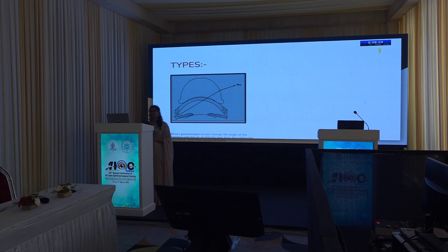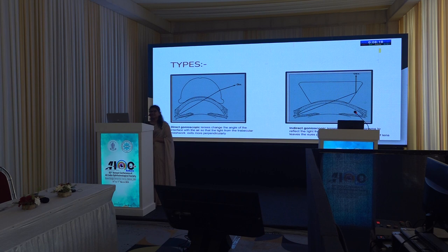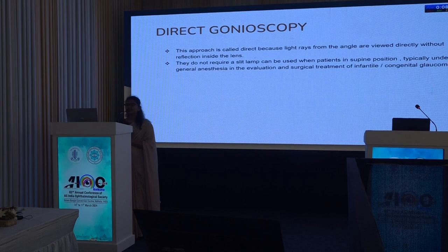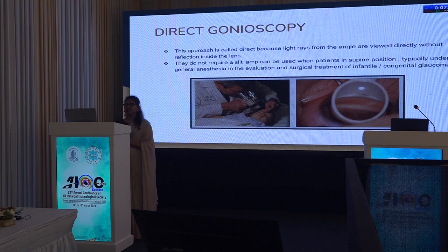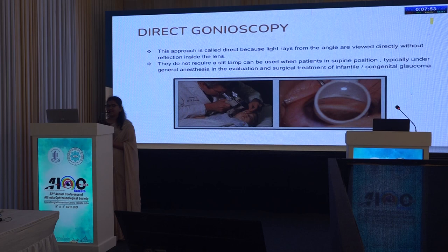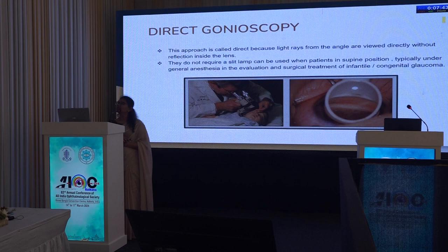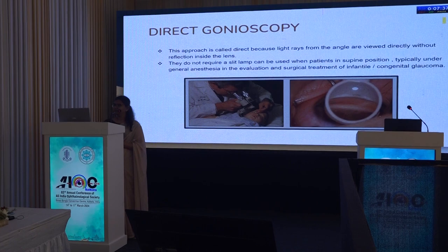There are two types of gonioscopy: direct and indirect. In direct gonioscopy, the angle structures are visualized directly using special lenses. It can be done in a supine position in an anesthetized patient, using a light source with a microscope or handheld slit lamp and lenses such as the Koeppe lens, allowing direct observation of the anterior chamber angle.